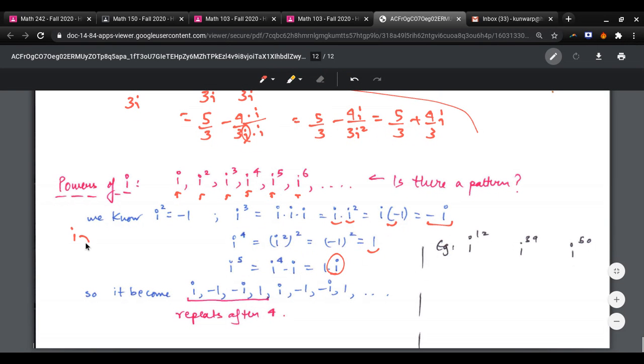So, it repeats after 4. So, the cycle goes i, negative 1, negative i, 1, back to i. This means that I can calculate any power of i. For example, i to the 12th. Now, 12 is divisible by 4. So, this is going to be 1. i to the 39 is, I find the nearest that I know. i to the 36 is going to be 1, because that's the nearest power of 4. And then, i to the 39 is going to be same as i cubed, which is negative i. i to the 50, I notice i to the 48 is 1. So, i to the 50 is just going to be i squared, which is negative 1. So, that's all for this week.